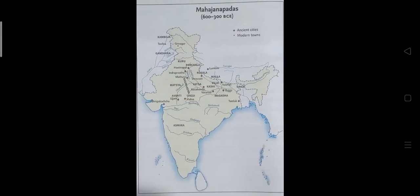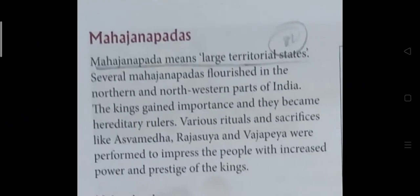As you can see, this is an Indian map which shows the territories of Mahajanapadas. Mahajanapadas means large territorial states. Several Mahajanapadas flourished in the northern and north-western part of India. The kings gained importance and became hereditary rulers. Various rituals and sacrifices like Ashwamedha, Rajasuya, and Vajapaya were performed to impress the people with the increased power and prestige of the king.